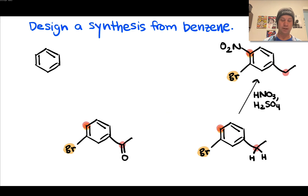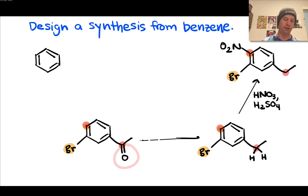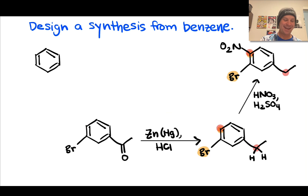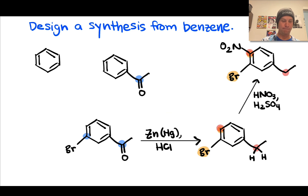Working backwards, we convert the ethyl group to an acetyl group. Converting acetyl back to ethyl is a reduction — going from two C–O bonds to two C–H bonds — accomplished using Clemmensen conditions (zinc-mercury amalgam and HCl). Now working backwards further, we have a meta director with bromine positioned meta to it, so we can work back to the starting material without the bromine, confident that bromination will install it meta to the carbonyl.